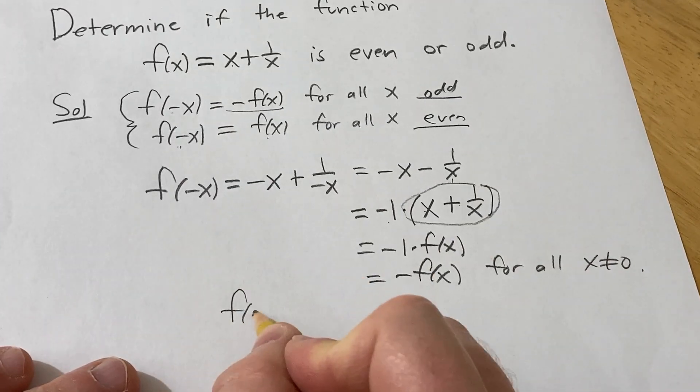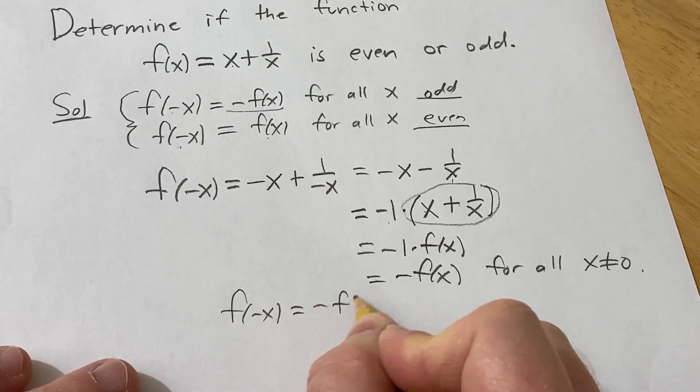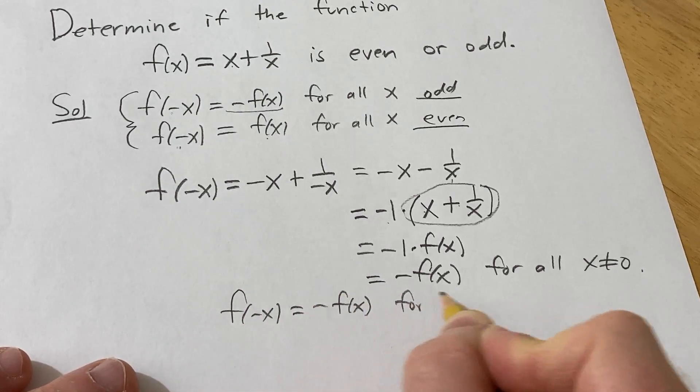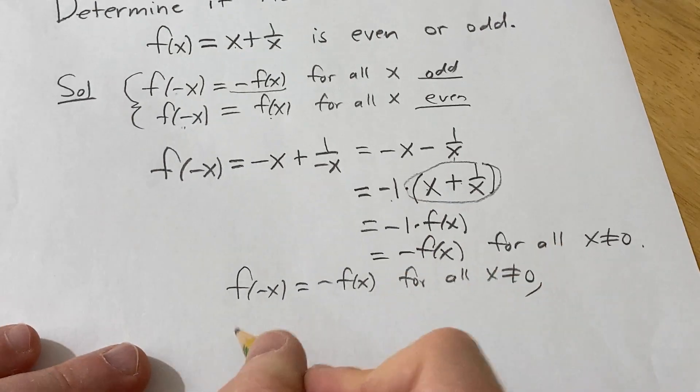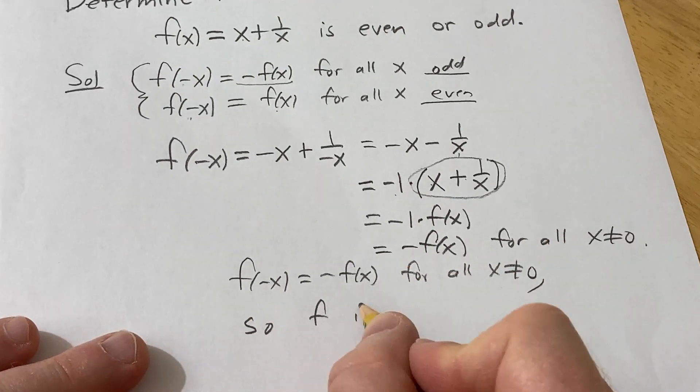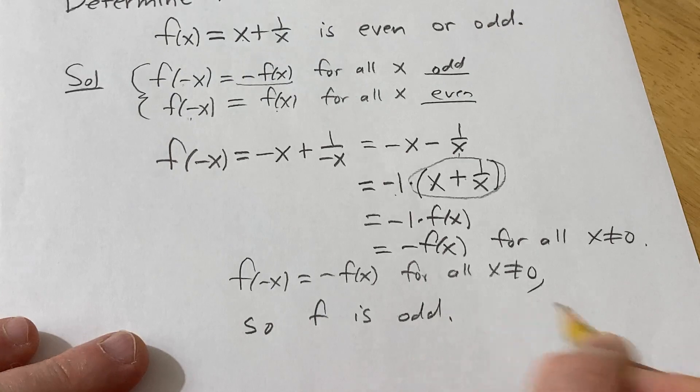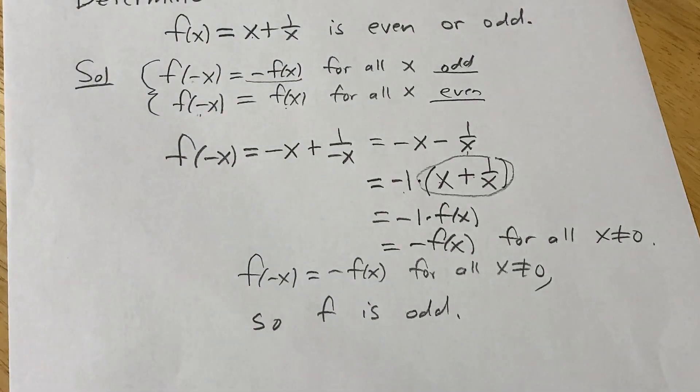So we have that f of negative x equals negative f(x) for all x not equal to 0. That means f is an odd function. And that completes the problem. I hope this video has been helpful. Good luck.